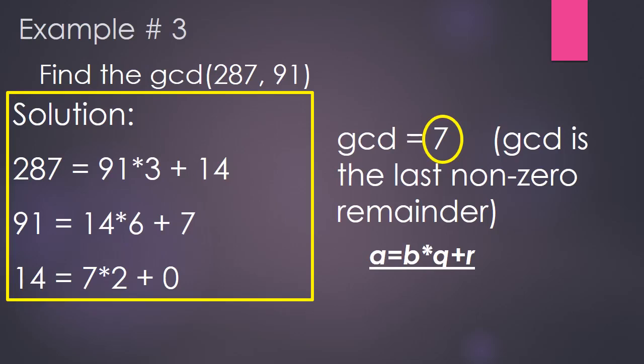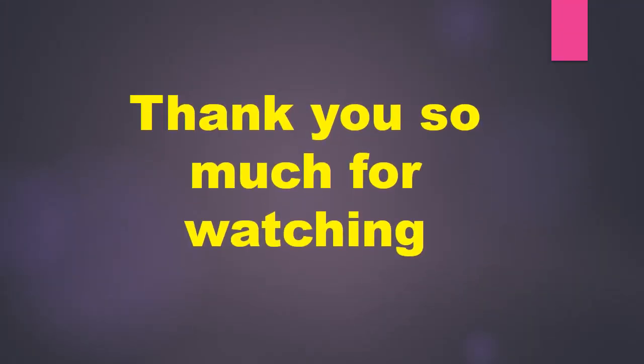We stop once the remainder becomes 0 and look for the last non-zero remainder, which is 7. Hence, the GCD of 287 and 91 is equal to 7. Thank you so much for watching, and I hope you learned something from this video lesson. Bye-bye.